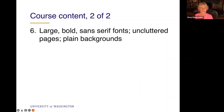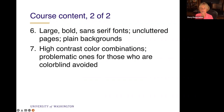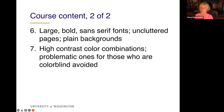Use large, bold, sans-serif fonts, uncluttered pages, and plain backgrounds — as I do in my PowerPoints. Use high contrast color combinations and avoid problematic color combinations for those who are colorblind. There are color checkers you can use to verify that colors on a page can be distinguished by individuals who are colorblind. I actually prefer to make sure that whatever I'm providing or asking people to do doesn't require them to distinguish color. For instance, if I use two buttons — one red and one green — I might make the green one a triangle and the red one a square, so the shape conveys the same information. Make sure videos are captioned and audio described. Audio description adds audio content for someone who's blind watching a video. Ideally, create videos where you speak all the content so you don't need audio description.